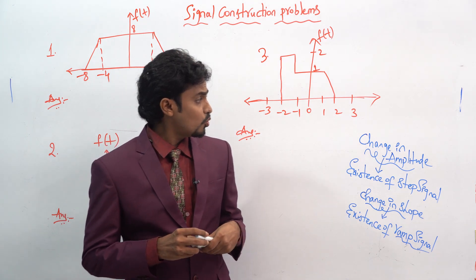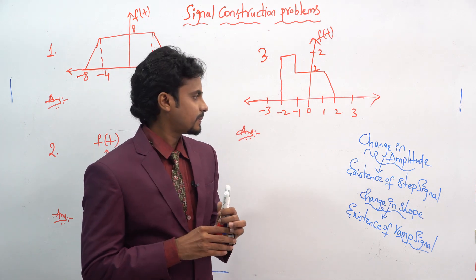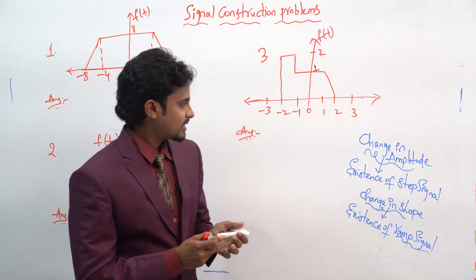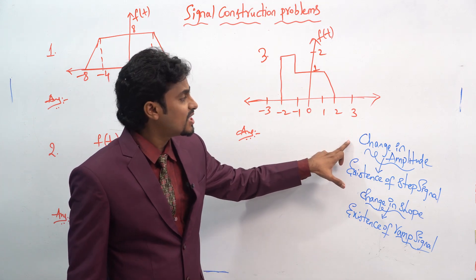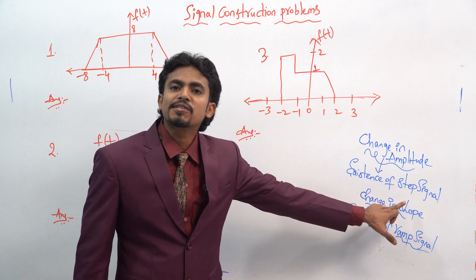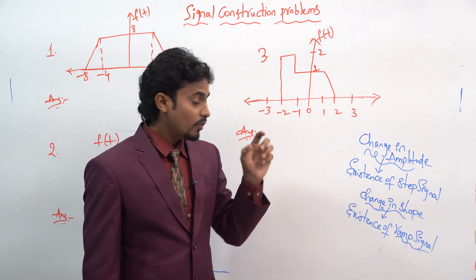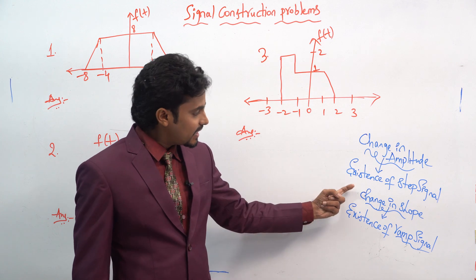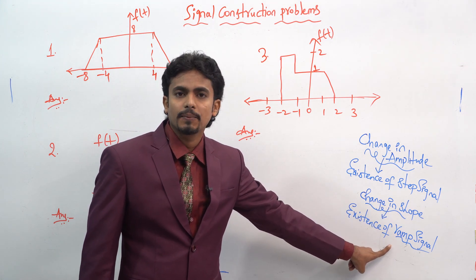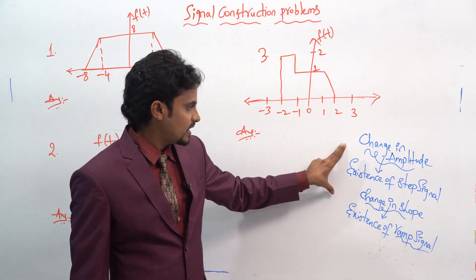Before moving on to the concept, for freshers and newcomers, let's review two basic points. First: whenever you see a change in amplitude, there will be an existence of a step signal. Second: whenever you see a change in slope, there will be an existence of a ramp signal. You should know these two points.